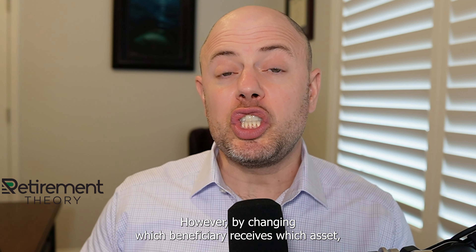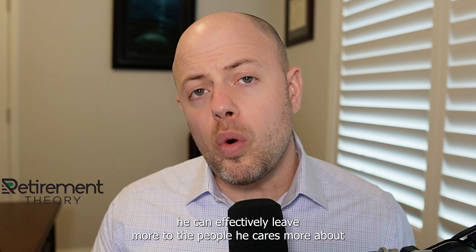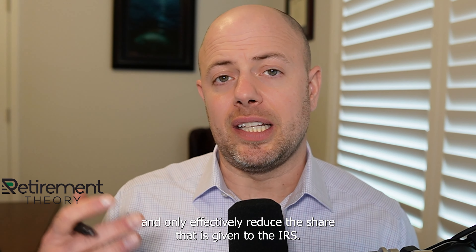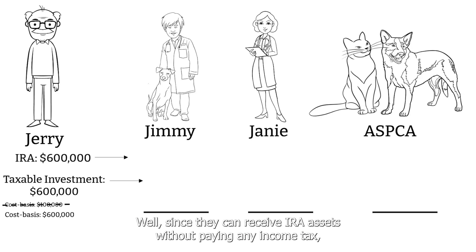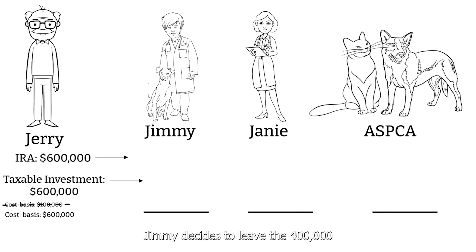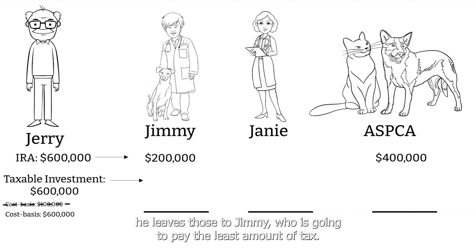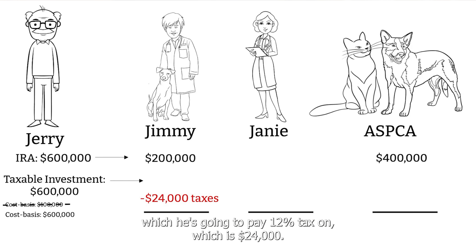By changing which beneficiary receives which asset, Jerry can effectively leave more to the people he cares about and reduce the share going to the IRS. Since the ASPCA can receive IRA assets without paying income tax, Jerry leaves them $400,000 all in IRA assets. With the remaining $200,000 of IRA assets, he leaves those to Jimmy, who will pay the least amount of tax — 12%, which is $24,000.